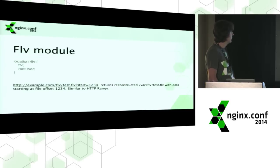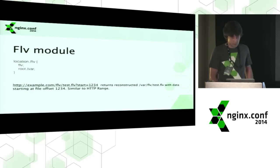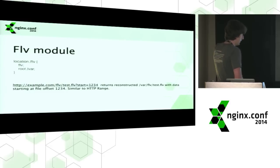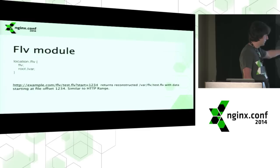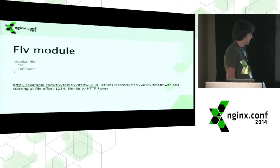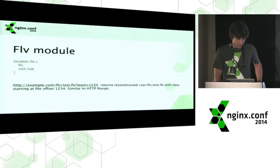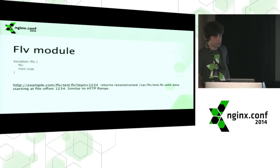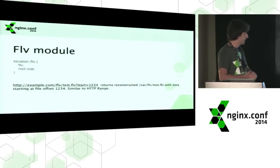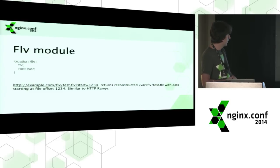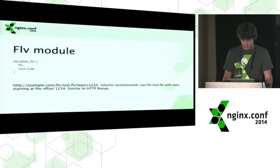The next one is the FLV module example. The configuration is very simple — again only a single directive. Nginx receives the start position, which is the number of bytes from the beginning of the file. That's how Flash sends this: Flash knows where the data starts and sends this argument. This module actually works similarly to HTTP range, but Flash wants it this way.